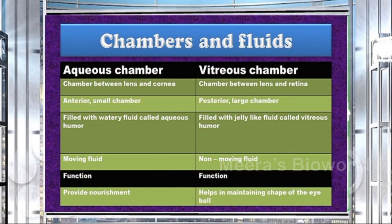Chambers and fluids in the eye: there are two chambers — the aqueous chamber and the vitreous chamber. The aqueous chamber is between the lens and cornea, while the vitreous chamber is between the lens and retina. The aqueous is the anterior, smaller chamber, while the vitreous is the posterior and largest chamber. The aqueous chamber is filled with a watery fluid called aqueous humor, whereas the vitreous chamber is filled with a jelly-like fluid called vitreous humor. Aqueous humor is a moving fluid, whereas vitreous humor is non-moving. The main function of aqueous humor is to provide nourishment, whereas vitreous humor helps in maintaining the shape of the eyeball.